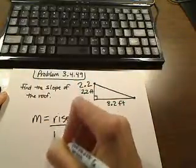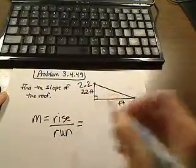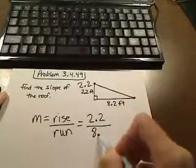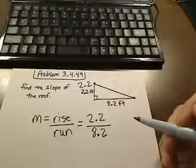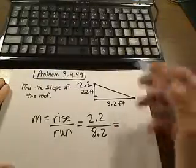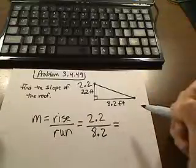So since we know that relationship with slope, we can say that this is 2.2 over 8.2. I'm dropping the feet units there; they would end up canceling anyways. The question that the person asked was concerned about how do I get a fraction out of this one that's two decimals.